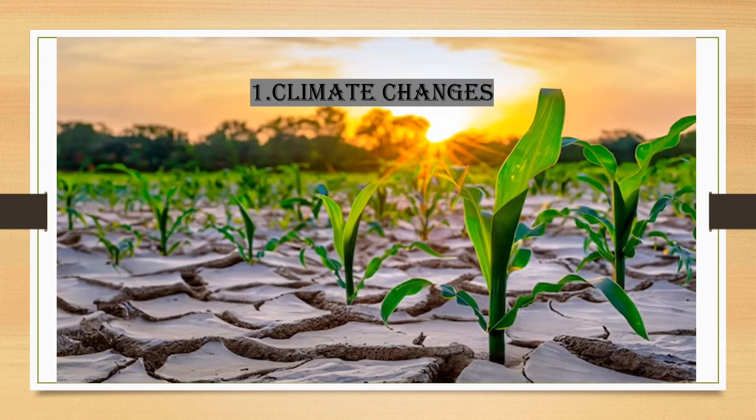The first and major problem in agriculture is climate change. Due to changes in the climate, there is a chance of crop failure. Frequent rains as well as dry climatic conditions both affect and lead to crop failure. This is one of the reasons why farmers are not choosing agriculture nowadays.